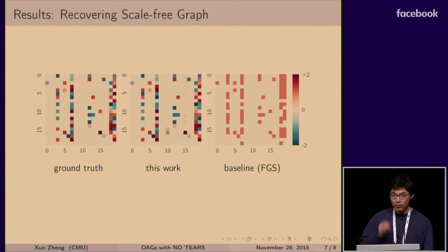So one nice property of our method is that it's agnostic about the graph structure, so we can naturally deal with very different graphs with very different degree distribution. So you can see on a scale-free graph, we have very different degree distribution, but we can still very closely estimate the ground truth, whereas the baseline doesn't do as well.